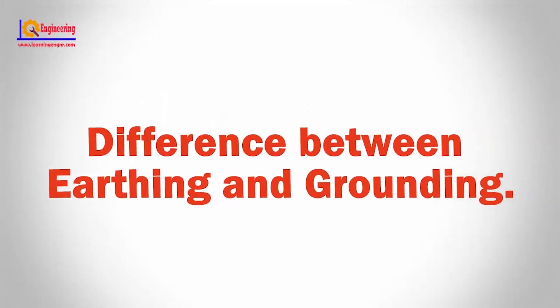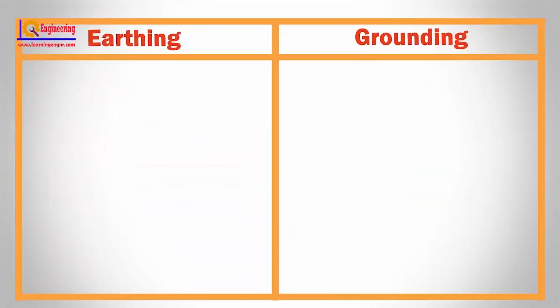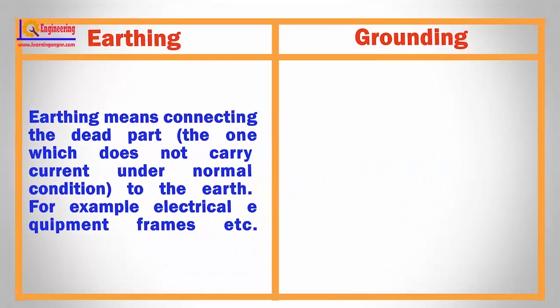In this video, we will show you the difference between earthing and grounding. Earthing means connecting the dead part, the one which does not carry current under normal condition, to the earth. For example, electrical equipment frames, etc.